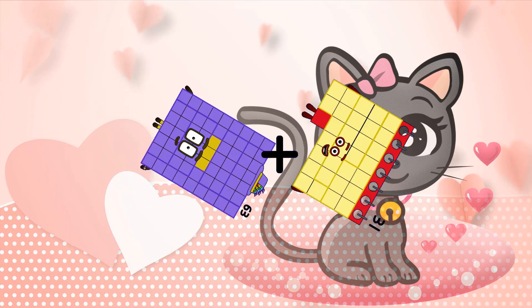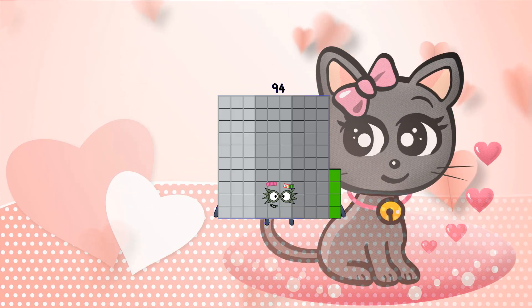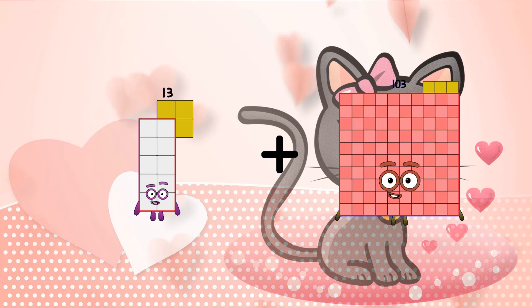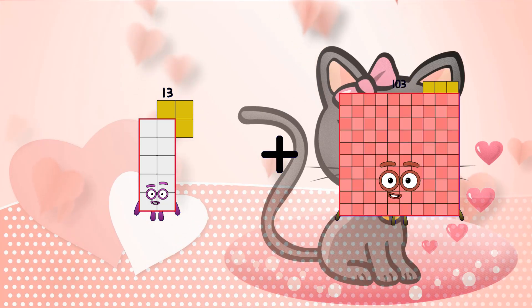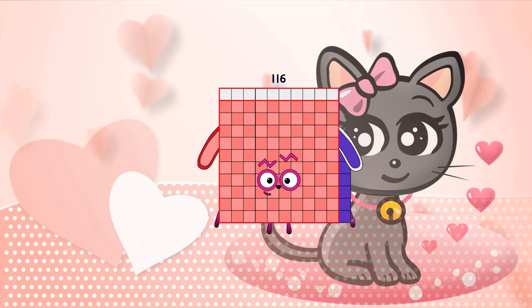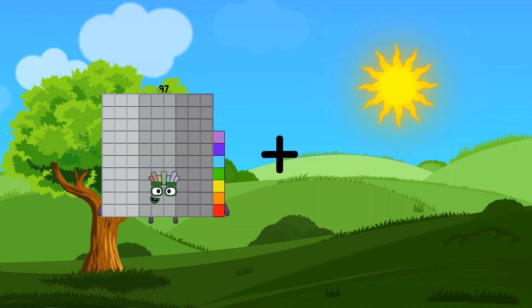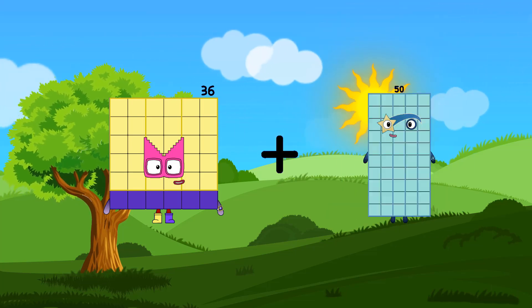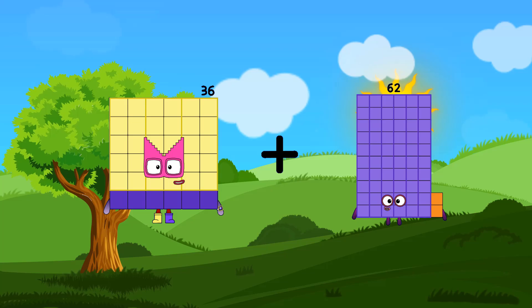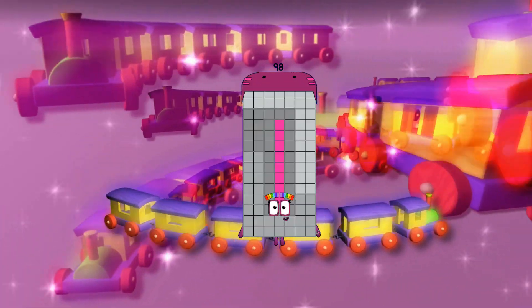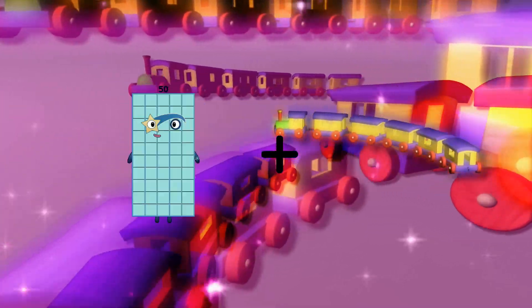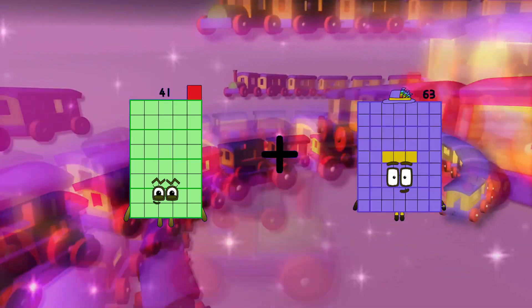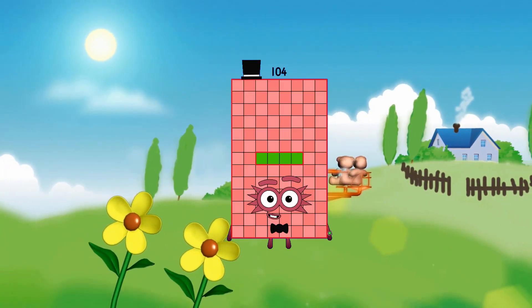Thirteen plus one hundred three equals one hundred sixteen. Thirty-six plus sixty-two equals ninety-eight. Forty-one plus sixty-three equals one hundred four.